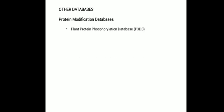Other databases include protein modification databases. There are a number of databases for protein post-translational modification. O-GlycoBase collects experimentally verified O- or C-glycosylation sites. The Plant Protein Phosphorylation Database or P3DB condenses phosphorylation and proteomics information including experimental phosphorylation sites from various plants.